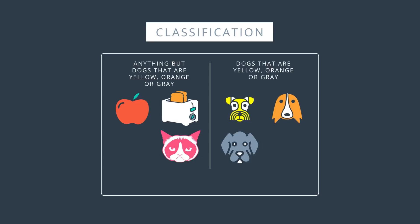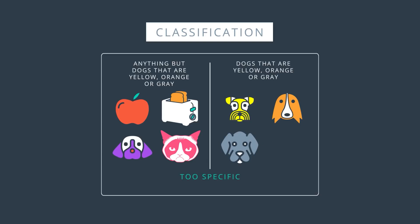But this problem is more conceptual. We can see the problem by introducing a testing set. If our testing set is the dog over here, a good classifier would put it on the right with the other dogs. But this classifier puts it on the left since the dog is not yellow, orange, or gray. The classifier is too specific — it fits the data well but fails to generalize. This is overfitting. It's like trying to kill a fly with a bazooka. Sometimes we'll refer to overfitting as error due to variance.